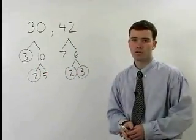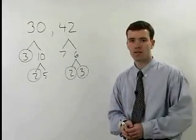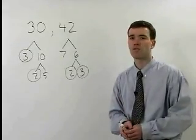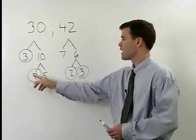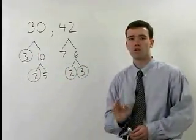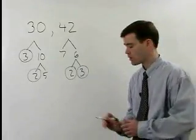Once you've found the factors that match up, simply multiply those factors together to get the greatest common factor of the two numbers. So since the 3s match up and the 2s match up, the greatest common factor is 3 times 2 or 6.